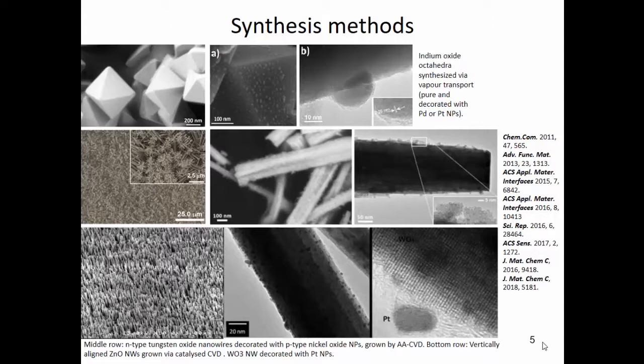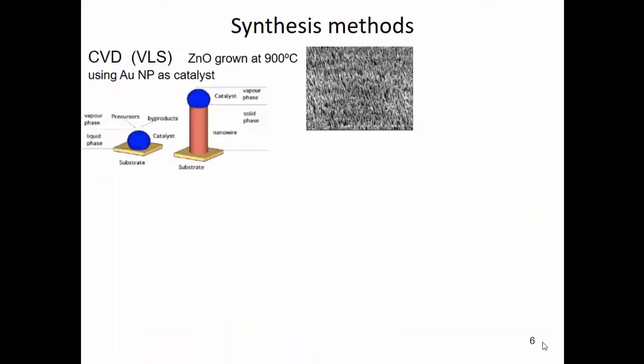Discussing the synthesis methods briefly: to get vertically aligned forests of zinc oxide nanowires, we use a standard catalyzed CVD run at atmospheric pressure at very high temperature — around 900°C. We need to prepare the substrate with a catalyst, for example by sputter-depositing some gold. When we reach 900°C, the gold film breaks into nanoparticles which then catalyze the growth.